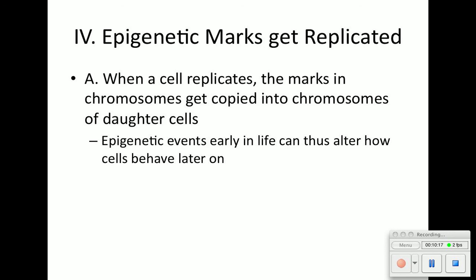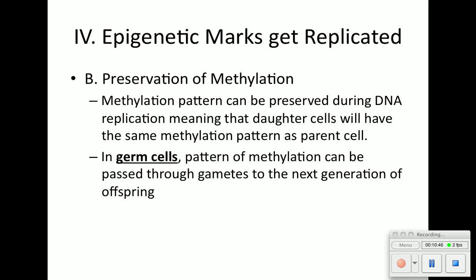Epigenetic marks get replicated when a cell replicates itself — the marks get copied into the chromosome of the daughter cells. If there are a lot of epigenetic events early in life, it can alter how cells will behave later in the organism's life. Methylation can be preserved, and daughter cells will have the same methylation pattern as parent cells. In germ cells — egg and sperm — the pattern of methylation can be passed through gametes to the next generation. So yes, epigenetic marks can be replicated and passed on generation to generation.